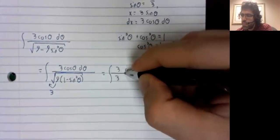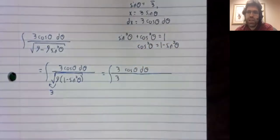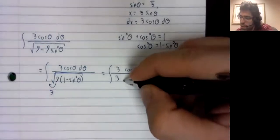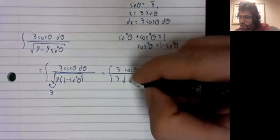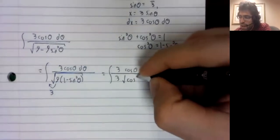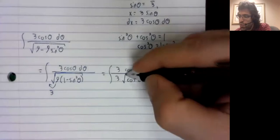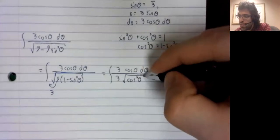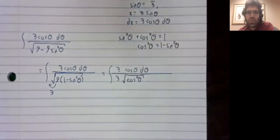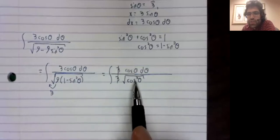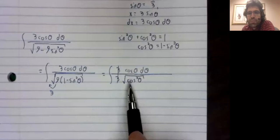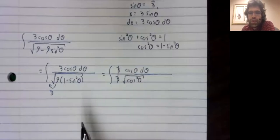So our constants cancel. That doesn't really matter, though. I mean, constants, we can just pull entirely out of square roots. What is more significant is that we have this square root of the cosine squared in the denominator.